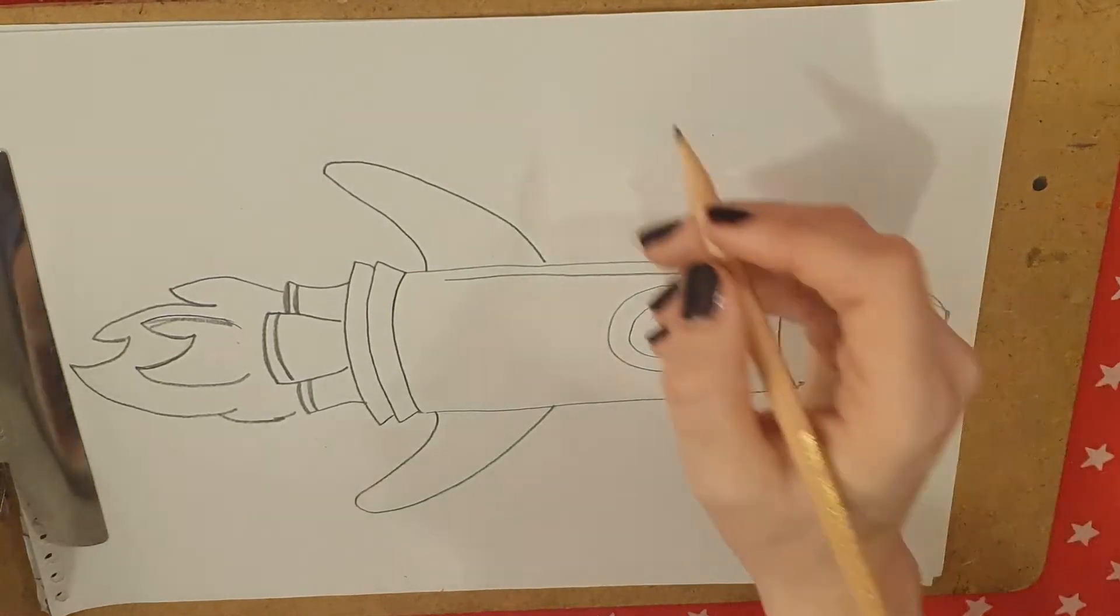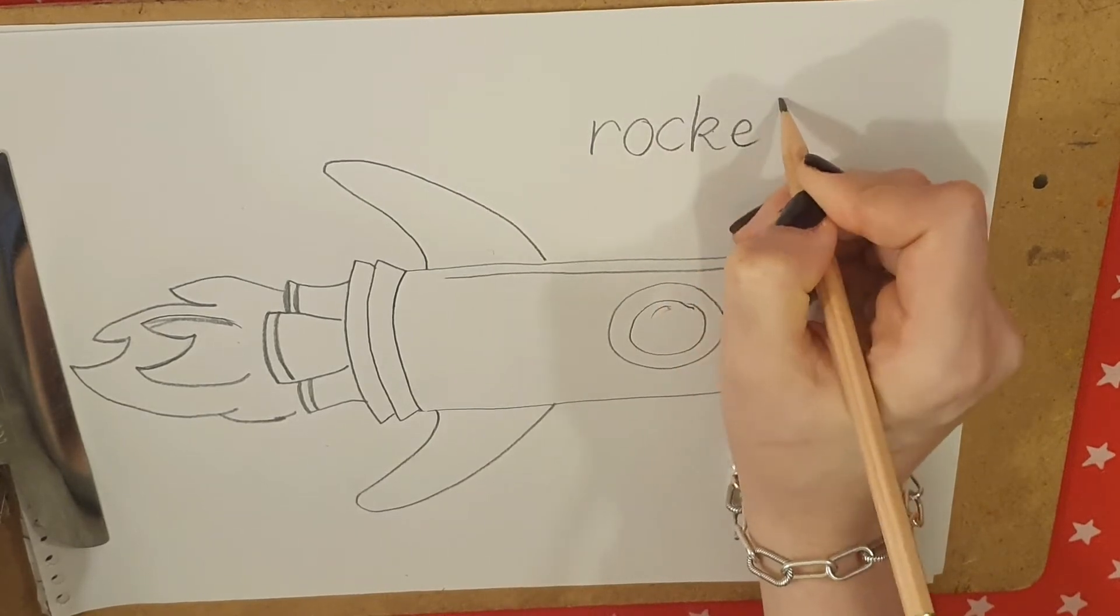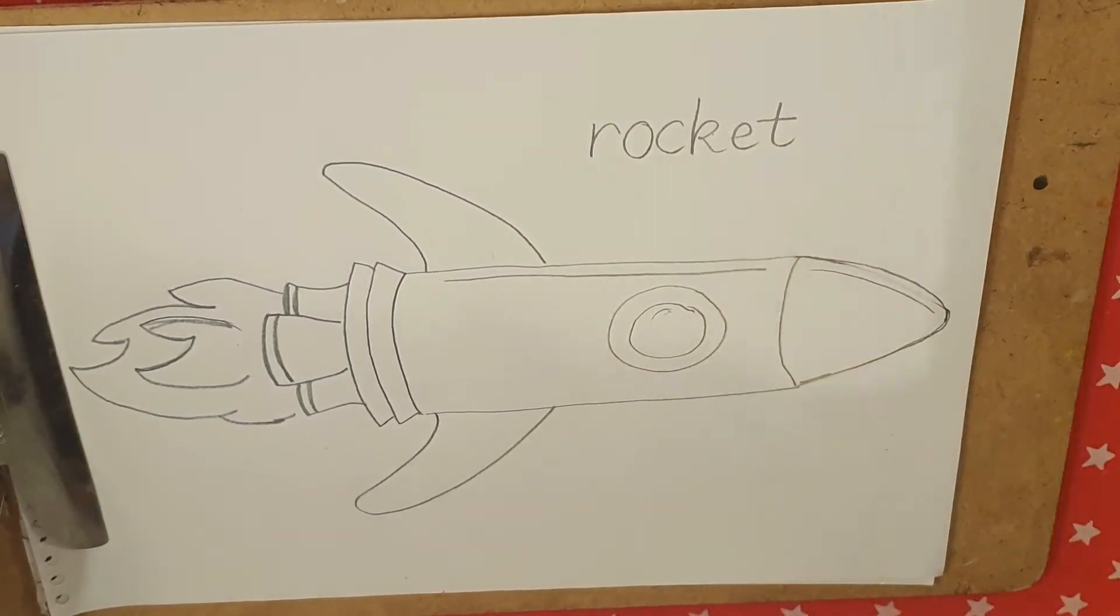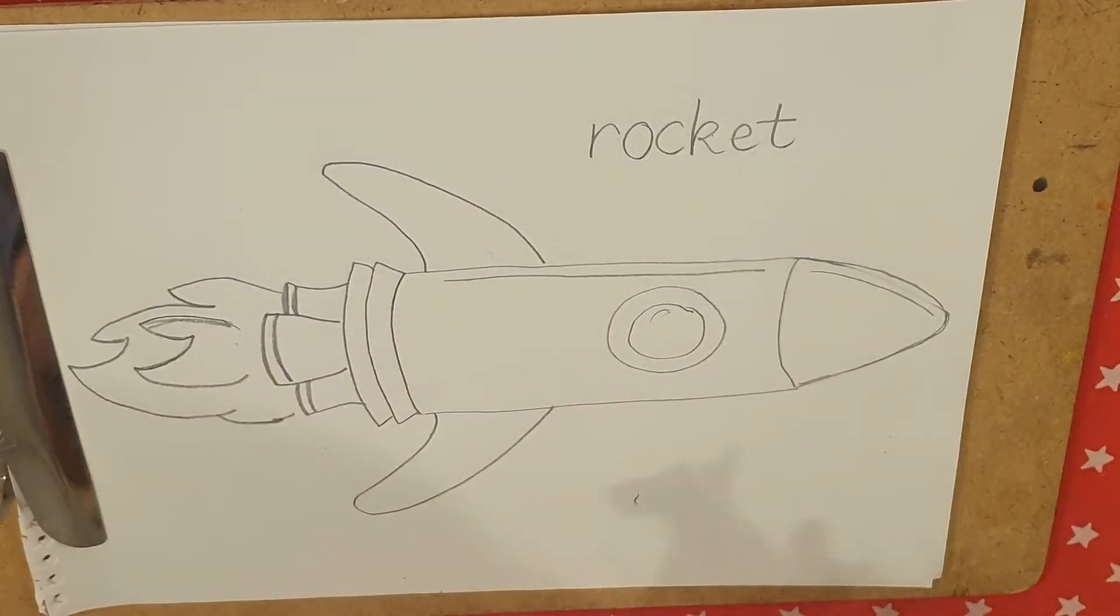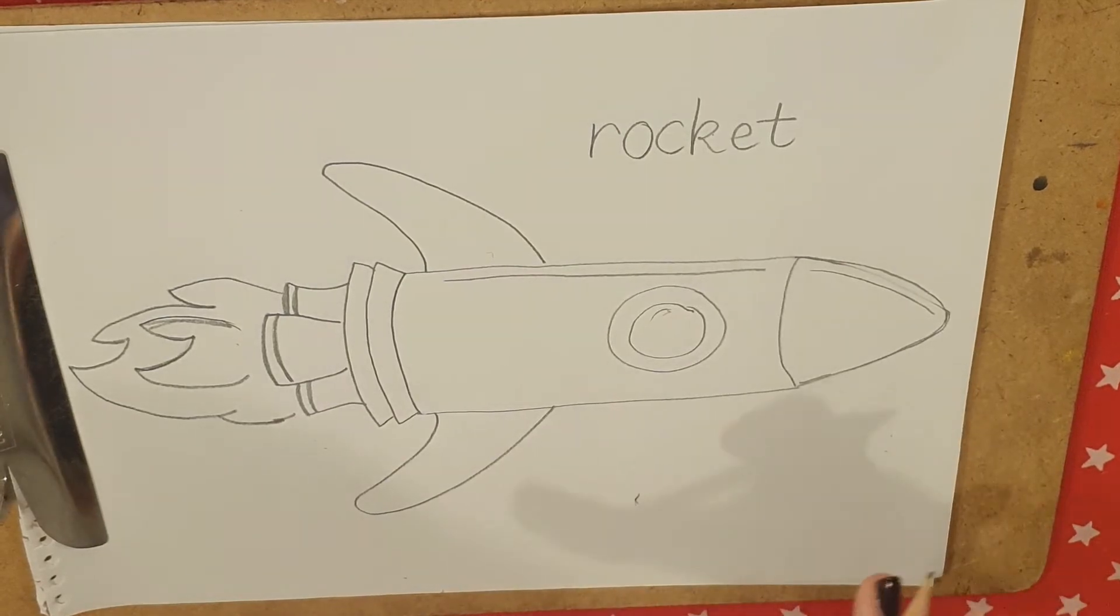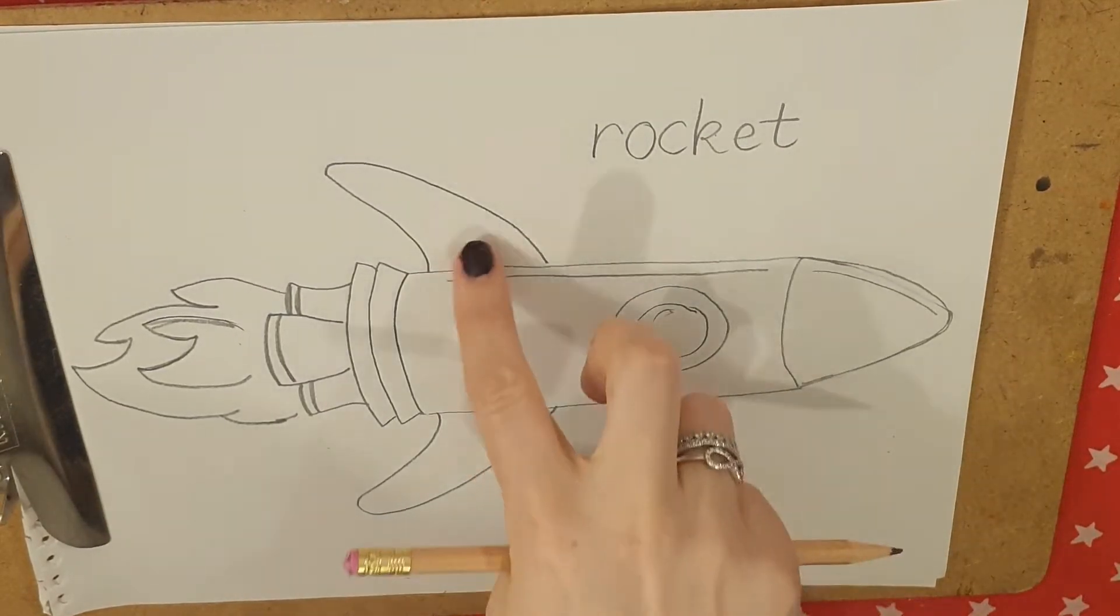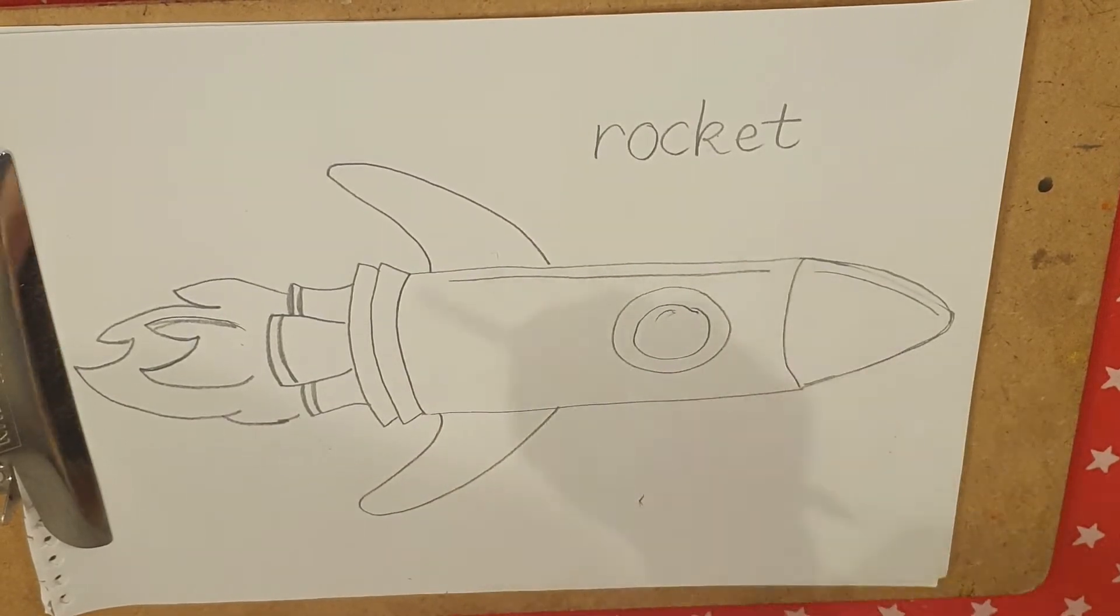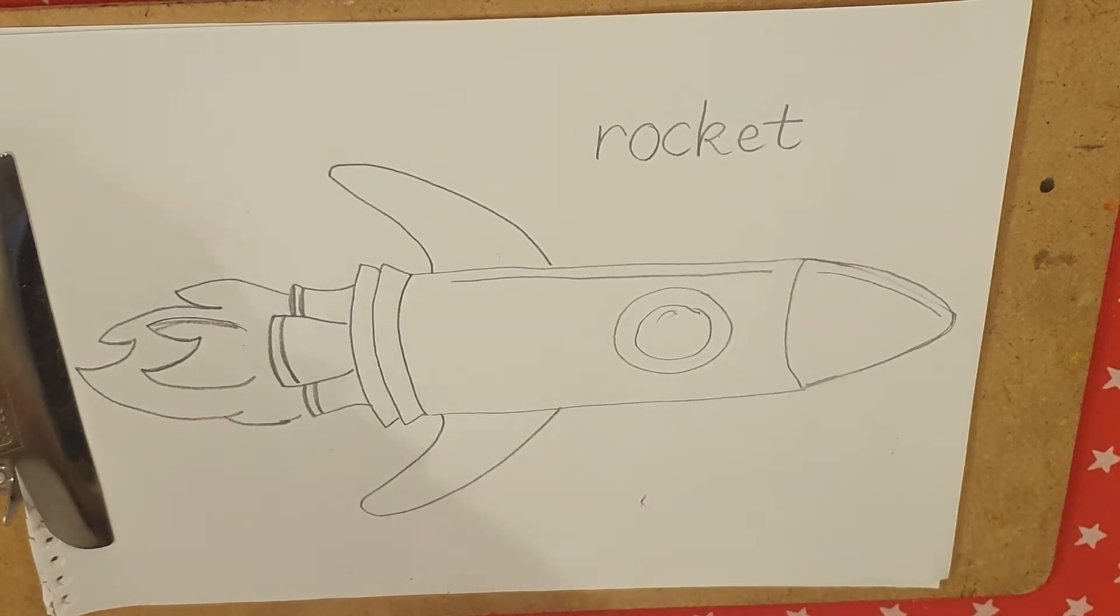Now what you can do is make sure you've labeled it. What you can do with your rocket is add some design so you could add stars, you could add flowers, you could color block. My favorite thing to do is color block. So I'm going to color block the wings and the top of the rocket. The rest I'm just going to color in nicely. Remember to outline and then color in sensibly.